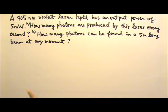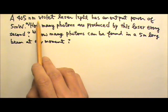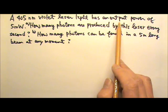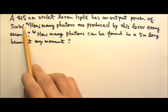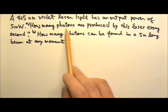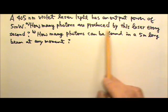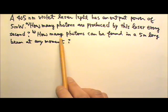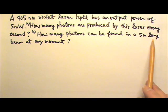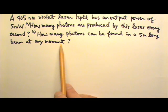Now let's try this problem. A 405 nm violet laser light has an output power of 5 mW. Part A: How many photons are produced by this laser every second? Part B: How many photons can be found in a 5 m long beam at any moment?